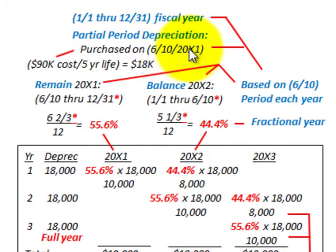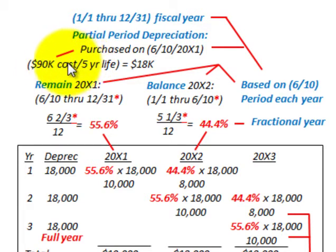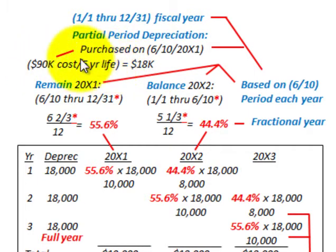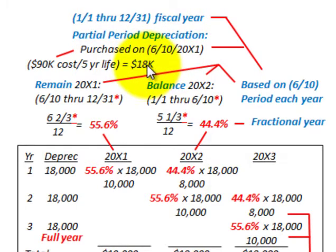For this example, we're going to use straight-line depreciation, but you could be using sum-of-years-digits or declining balance as well — the same methods apply to your allocation. We're going to have a $90,000 piece of equipment that's purchased with a five-year life, giving us $18,000 worth of depreciation each year.